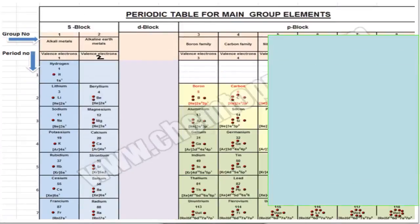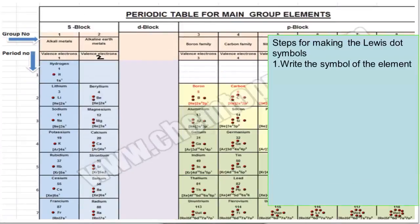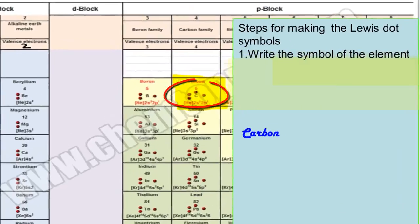The very first step in making a Lewis dot symbol is writing the symbol of the element. Here I have selected carbon as an example. The symbol of carbon, which is one of the most famous elements of the periodic table, is C.